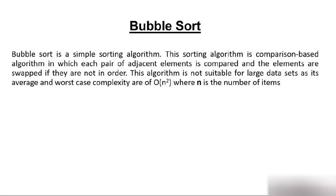This algorithm is not suitable for large data sets as its average and worst-case complexity are of the order of n squared, where n is the number of items. If there are thousands or ten thousand elements, the number of comparisons and time taken will be very high. If the number of elements is small, bubble sort is fine, but for larger inputs it is not suggested due to its O(n²) complexity.